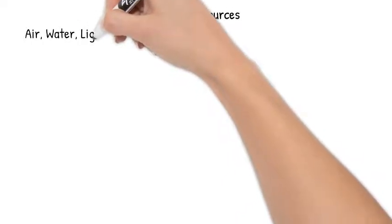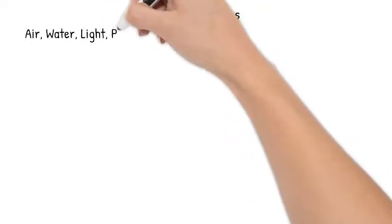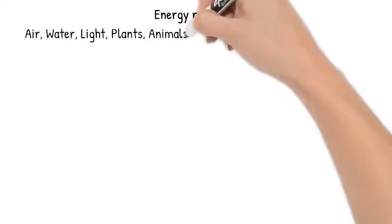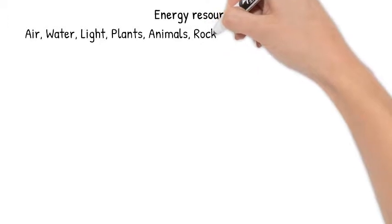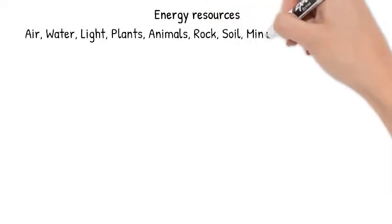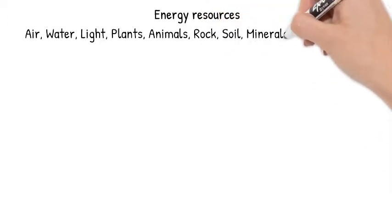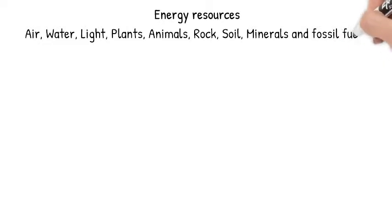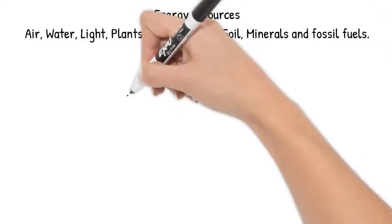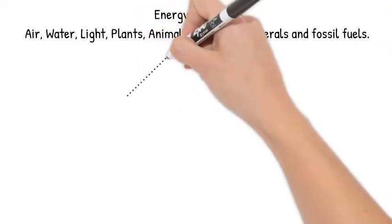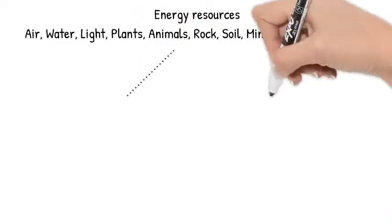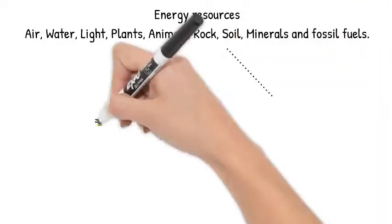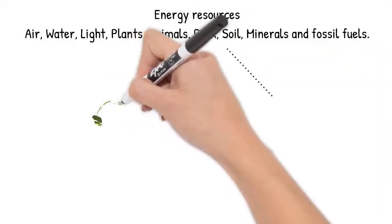Energy resources are something that can be used to produce electricity, to produce heat or to power something. Matter that stores energy is called a fuel, and the earth has naturally blessed us with many things that we are able to use as energy resources, such as air and water, light, plants, animals, rocks, soil, minerals and fossil fuels.